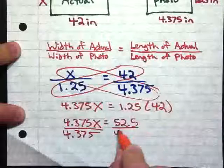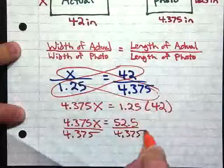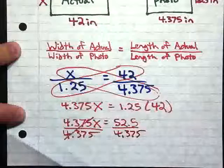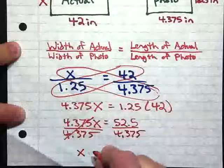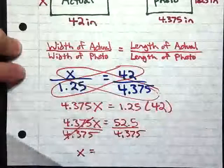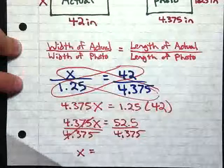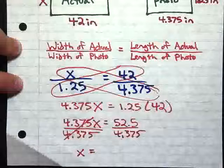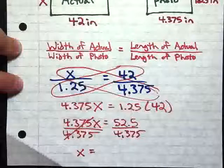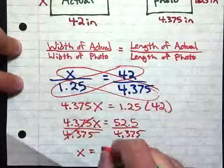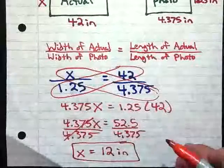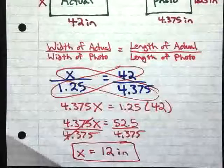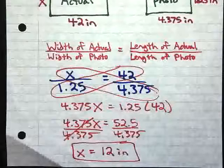Now I need to divide both sides by 4.375, and when I do that, these 4.375s over here cancel out, leaving me with X equals 52.5 divided by 4.375, which is 12 inches. And we have the width of our actual painting.